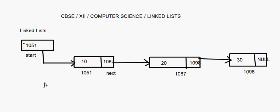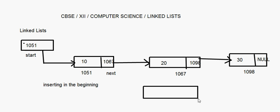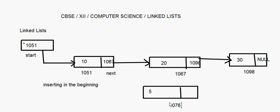The first operation we will learn is inserting at the beginning. Supposing you already have a linked list and you create a new node to be inserted at the beginning. You give some value to this new node — say the value is 5 — and an address is allotted to it, say 1076.